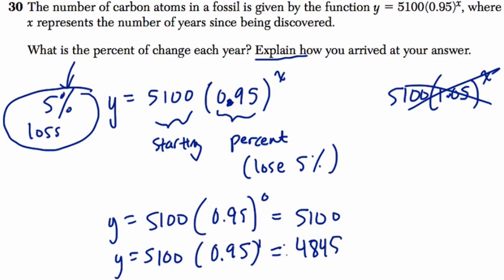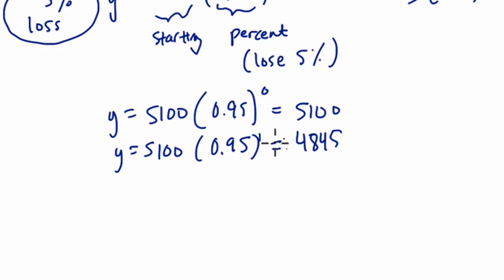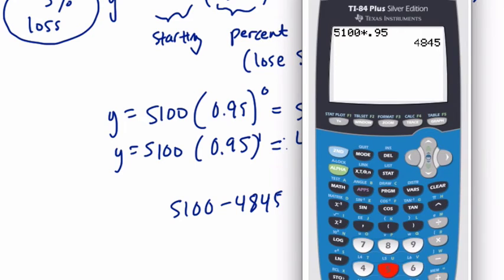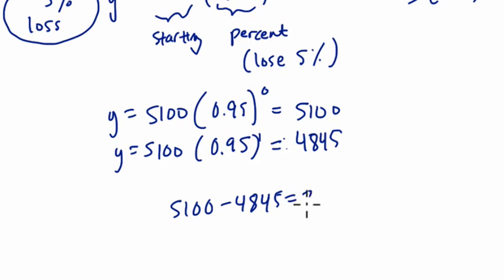And what we can show is that we've lost value here, right? What is the percent change right here? So 5100 minus 4845, that's 255. How much did we just lose?